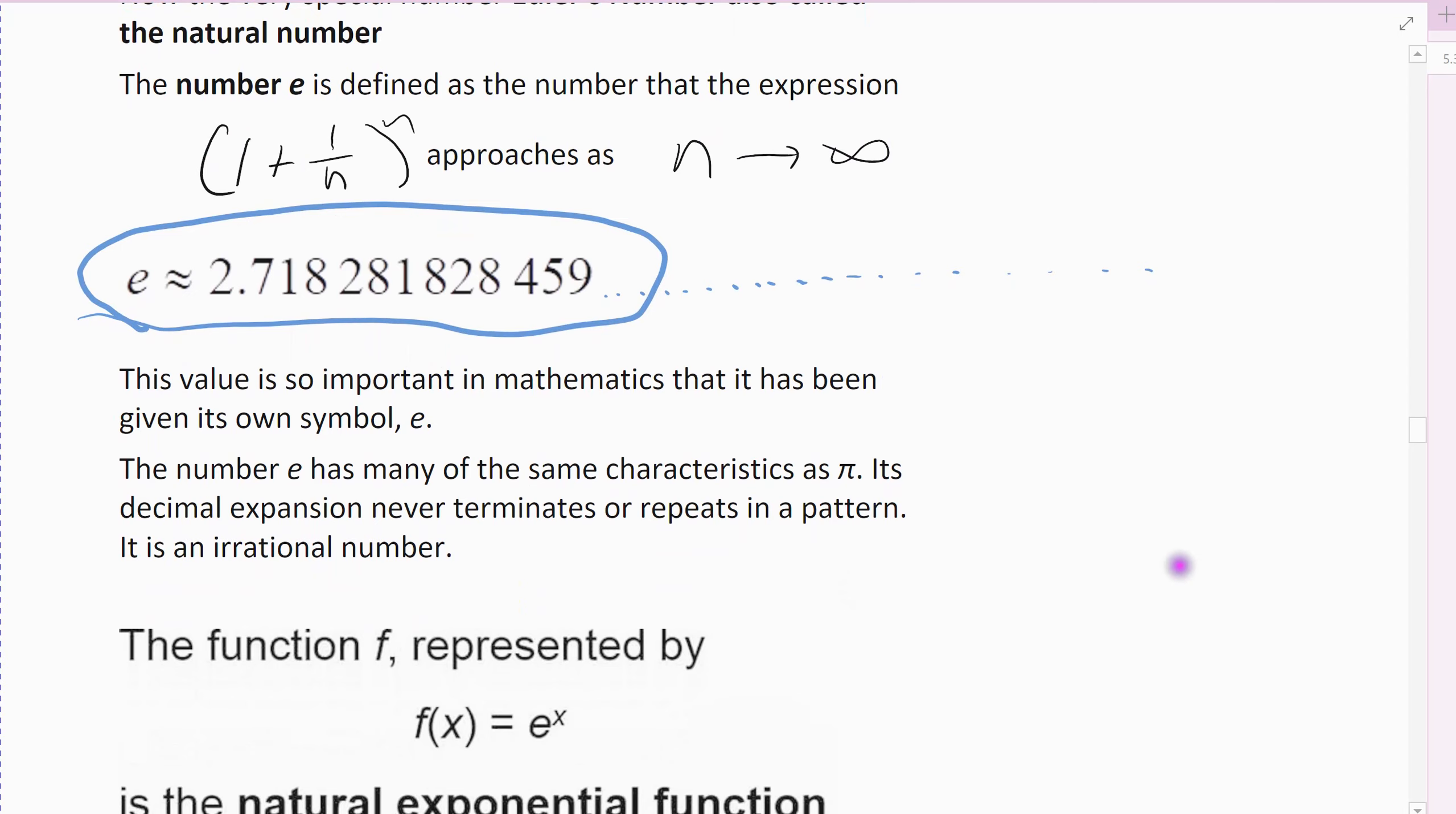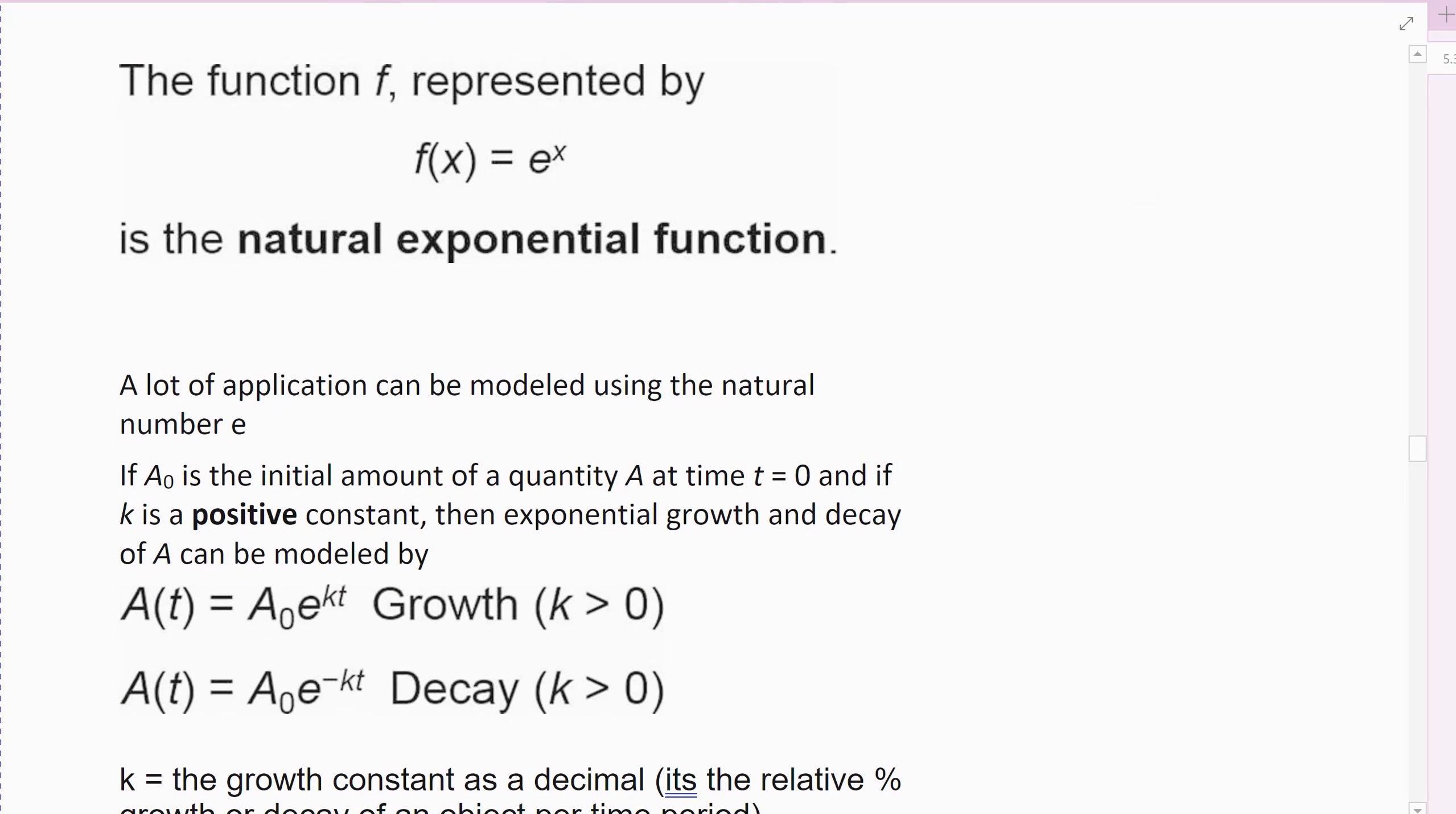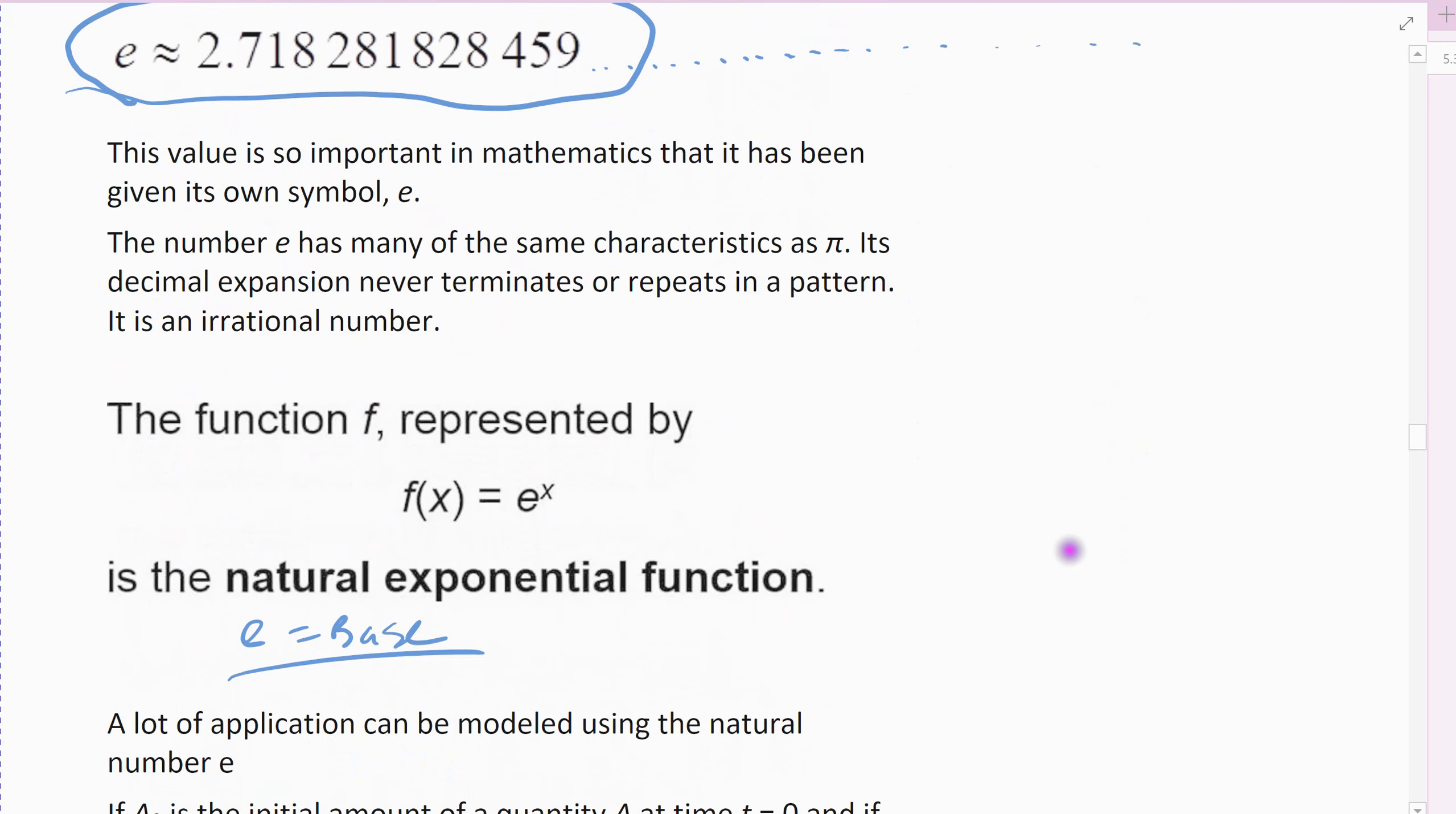So our natural number E, when we let E be the base, this is the natural exponential function. Usually when people think of exponential growth and exponential decay, this is the function they think about. E is the base, that ugly irrational number 2.718281... is my base.